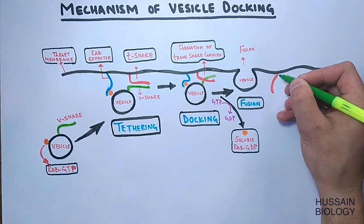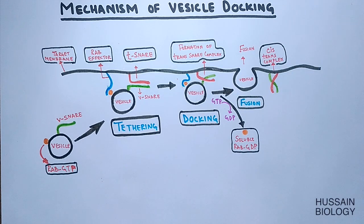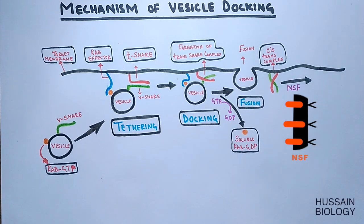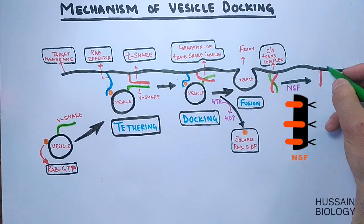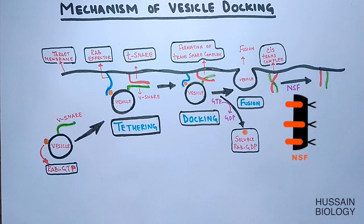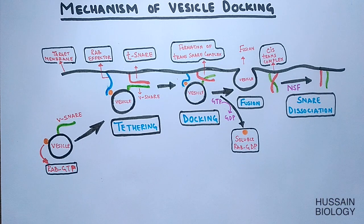After fusion, the two SNARE proteins have formed a cis-SNARE complex and need to be separated from each other. This dissociation is carried out by the NSF protein, which is part of the SNARE complex itself — recall that SNARE is made up of NSF and the NSF receptor (SNAP). To initiate dissociation of T-SNARE and V-SNARE, NSF, acting as an ATPase, hydrolyzes ATP to release the complex so that the SNARE proteins are recycled back.